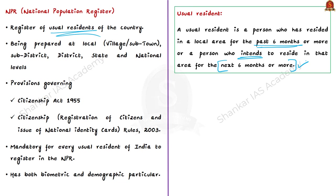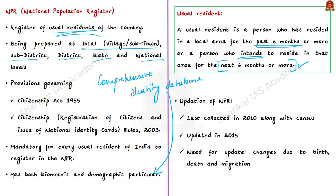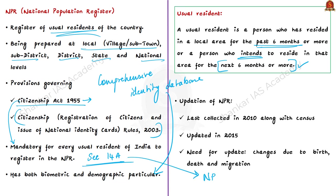The objective of NPR is to create a comprehensive identity database of every usual resident in the country, containing demographic details and biometric particulars. NPR is being prepared at local, sub-district, district, state and national levels. Importantly, NPR is prepared under the provisions of the Citizenship Act of 1955 and the Citizenship Rules of 2003 — formally called the Citizenship (Registration of Citizens and Issue of National Identity Cards) Rules, 2003. Under the Citizenship Act of 1955, it is mandatory for every usual resident of India to register in the NPR, as per Section 14A, which makes it compulsory for every citizen to register on the National Register of Indian Citizens (NRIC).